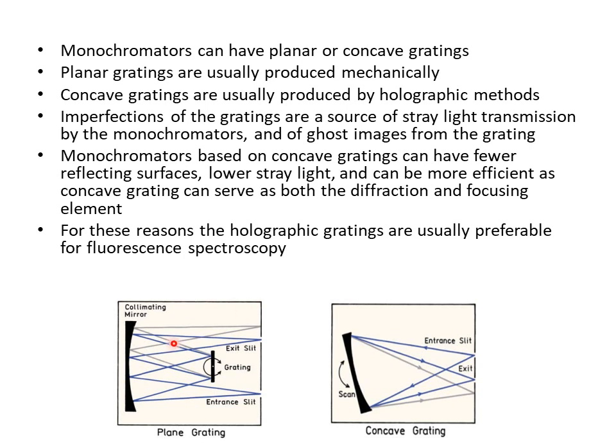As shown in the figure, here is the planar grating and here is the concave grating. Planar gratings are usually produced mechanically while concave gratings are produced holographically. If these gratings are produced inaccurately — if there are imperfections — these will be a source of stray light transmission by monochromators. The manufacturing of the grating is a very important step, as any problem may cause stray light transmission and ghost images.